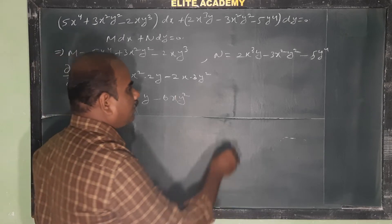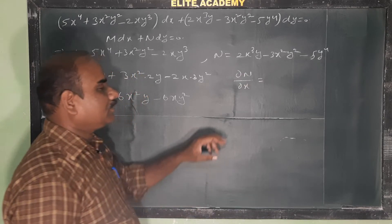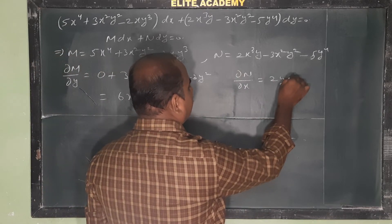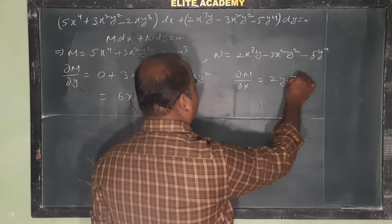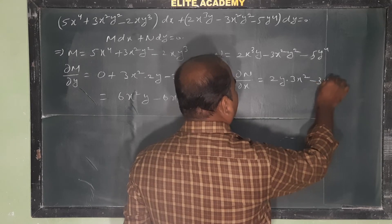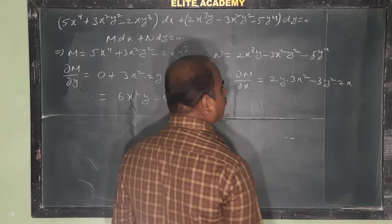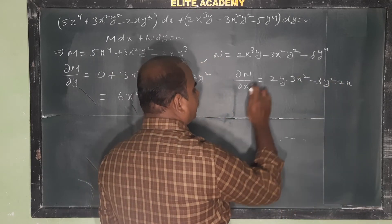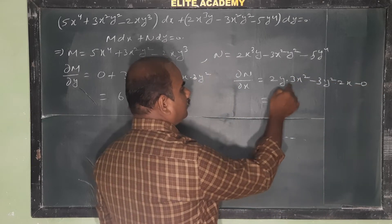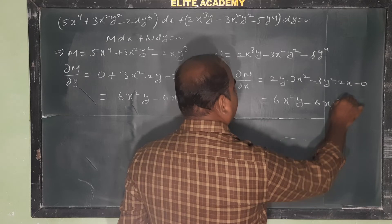Now ∂N/∂x means differentiate N partially with respect to x. For 2x³y, y is constant, so the derivative of x³ is 3x², giving 6x²y. For −3x²y², y² is constant, so the derivative of x² is 2x, giving −6xy². The term −5y⁴ is constant with respect to x, so its derivative is 0. Therefore ∂N/∂x = 6x²y − 6xy².